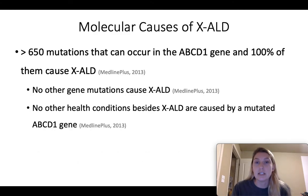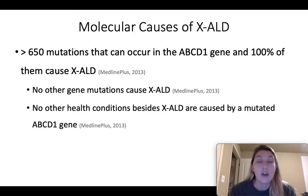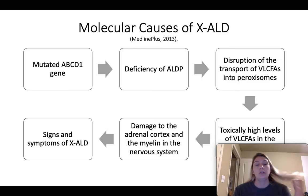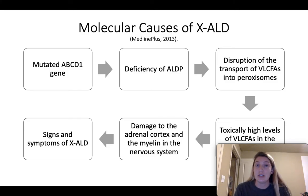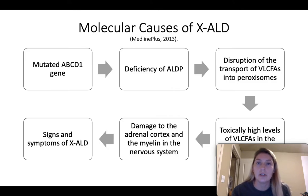When there is a mutation to the ABCD1 gene, this is when XALD occurs. There are over 650 mutations that can occur in the ABCD1 gene, and 100% of those mutations will cause XALD. No other gene mutations cause XALD, and no other health conditions besides XALD are caused by the mutated ABCD1 gene. The mutated gene results in a deficiency of ALDP protein, disrupting transport of very long chain fatty acids into the peroxisome — so they are not destroyed, leading to toxically high levels in the body, which then cause damage to the adrenal cortex and myelin in the nervous system, resulting in the signs and symptoms of XALD.